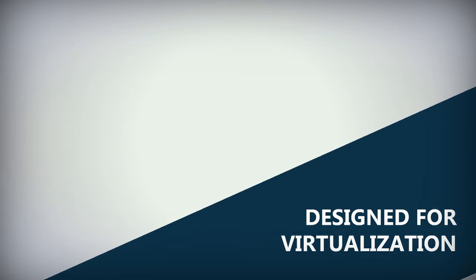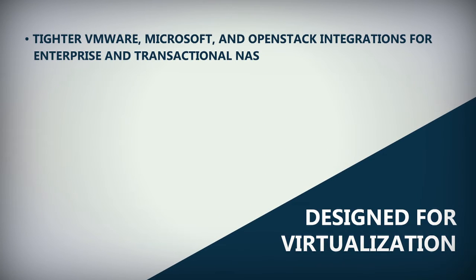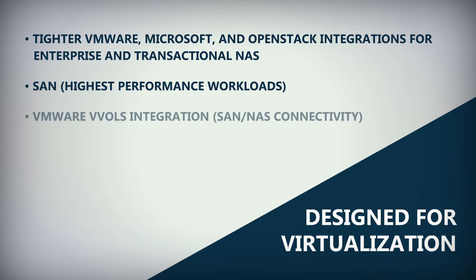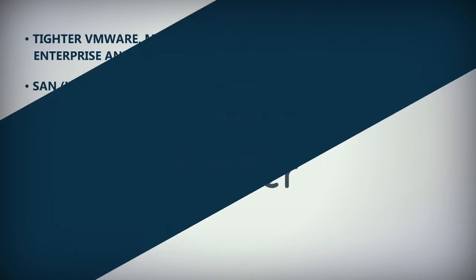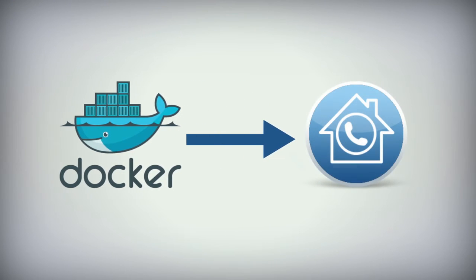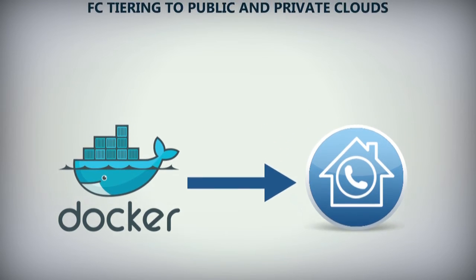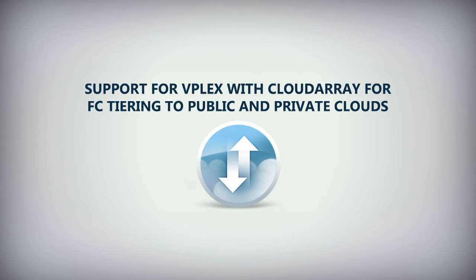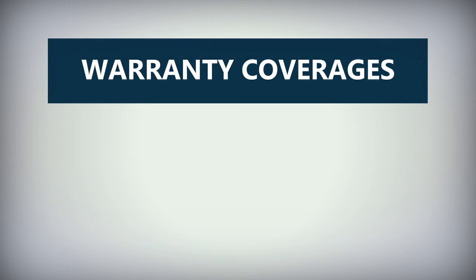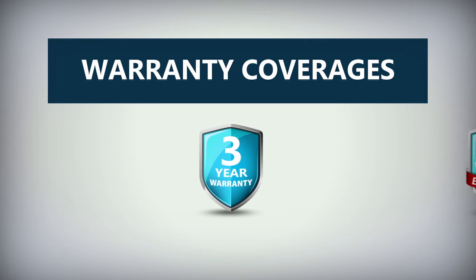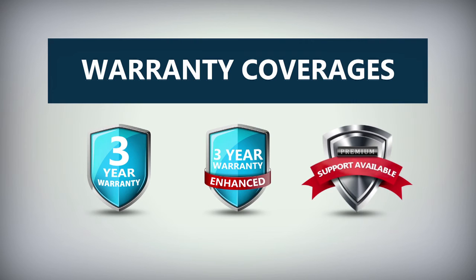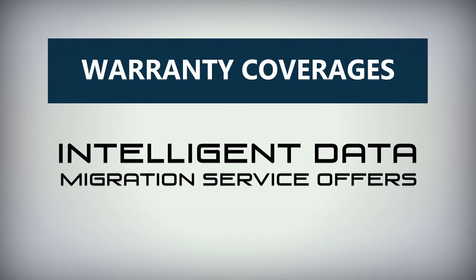Unity is designed for virtualization and offers tighter VMware, Microsoft, and OpenStack integrations for enterprise and transactional NAS, SAN, highest-performance workloads, and VMware vVols integration, along with support for no-cost plugins for VMware and Microsoft virtualization admins. Unity is designed to support Docker container technology, with the first iteration being the ESRS Dial Home feature, and support for vPlex with CloudArray for FC tiering to public and private clouds. A range of warranty coverages is available, including a 3-year limited warranty for both all-flash and hybrid configurations, with enhanced and premium support options and intelligent data migration service offers.